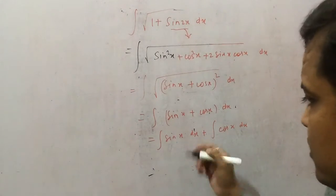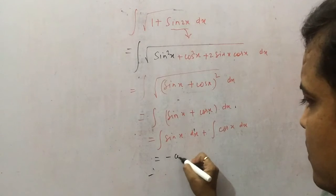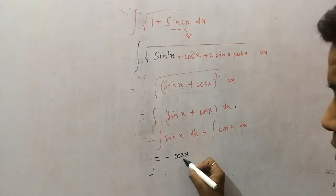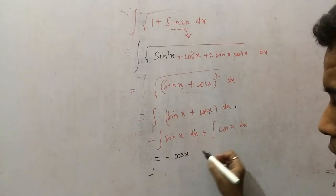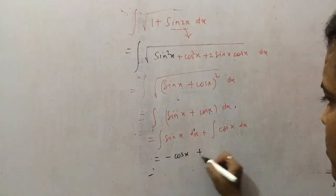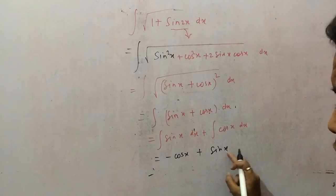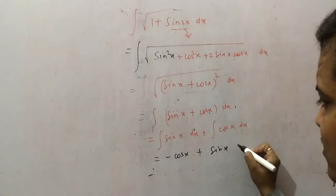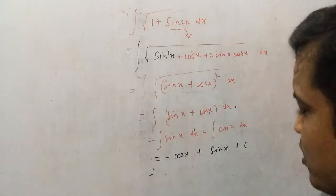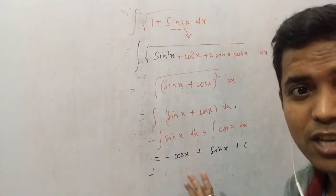What is the integration of sin x? Of course it is minus cos x. As you know, the differentiation of cos x is minus sin x. Plus, integration of cos x is sin x because the differentiation of sin x is cos x. As you know, integration is the inverse process of differentiation.